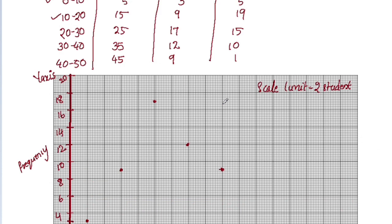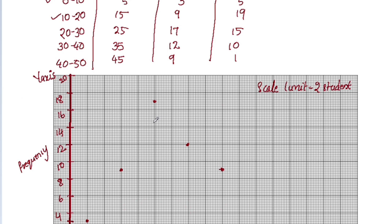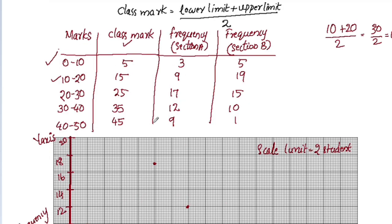Now we have the frequency polygon introduced. To complete the frequency polygon, we need to add class intervals at the first and last positions with frequency zero. We add a class interval such that the upper limit gives zero frequency, and the lower limit is negative 10.